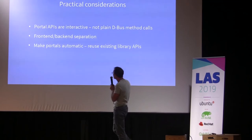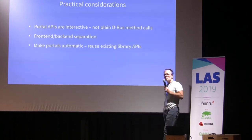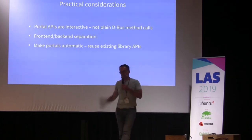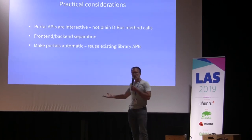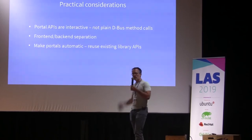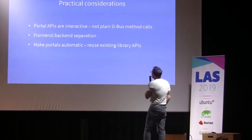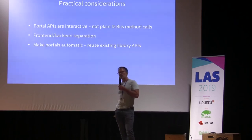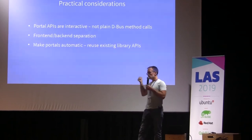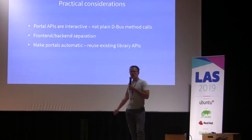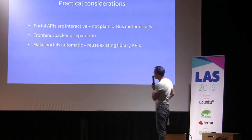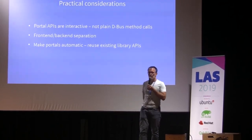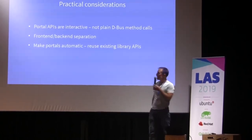Moving on to practical considerations: our portal APIs are interactive for the most part, which has consequences for how we design the D-Bus APIs. We don't want the portal to pop up a dialogue, the user walks away for coffee, the D-Bus call times out, and things are in a bad state. So instead of a plain D-Bus method call, the portal APIs use a request object and a response signal — you make one call to pop up the dialogue, and eventually when the interaction is done you get a signal on the object created by that first method call. This also allows applications to cancel portal interactions halfway through if they no longer need the data.